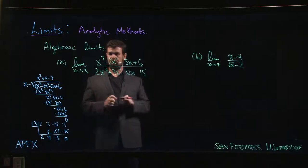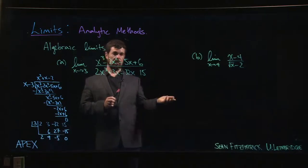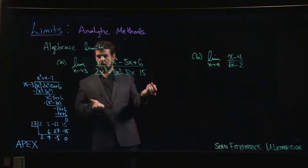In this first limit, the first thing you might try is direct substitution. It is a rational function after all. We have a theorem that says you can do direct substitution for rational functions; you just got to make sure the denominator isn't zero.